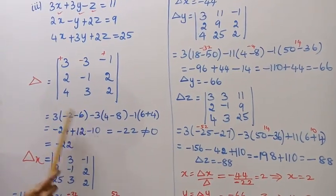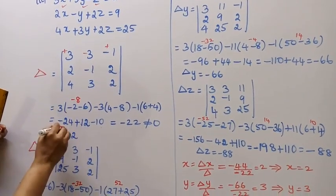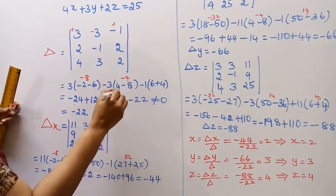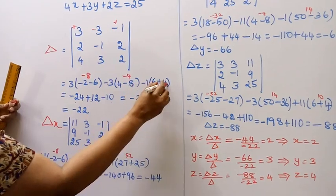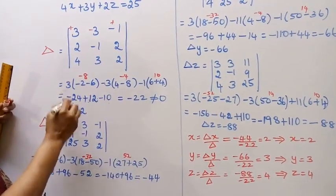Minus 2 minus 6 minus 8, minus 8 into 3, minus 24, 4 minus 8 minus 4, minus 4 into minus 3 plus 12, 6 plus 4, 10, 10 into minus 1 minus 10.